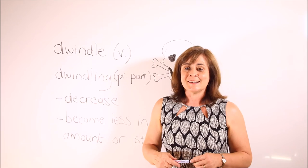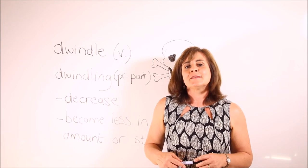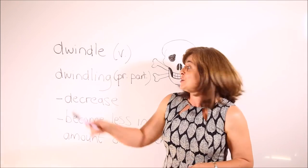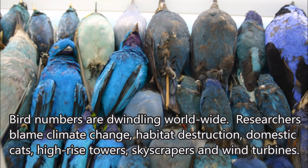Here is a sample sentence, and I used a very disturbing photograph that I took in the Humboldt Museum of Natural History to illustrate the word dwindling. Bird numbers are dwindling worldwide. Researchers blame climate change, habitat destruction, domestic cats, high-rise towers, skyscrapers, and wind turbines.